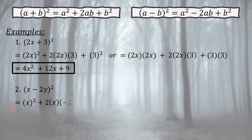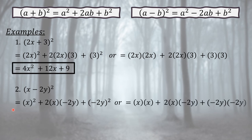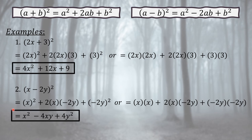Second example: (x − 2y)². Square the first term: x squared; twice the product of x and negative 2y; square the second term: (negative 2y)². Expanding: x times x + 2 times x times negative 2y + negative 2y times negative 2y. Final answer: x squared minus 4xy plus 4y squared. (Note: negative 2y times negative 2y = positive 4y squared.)